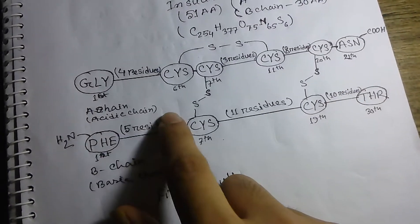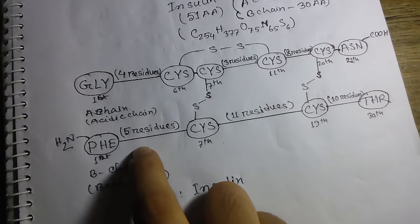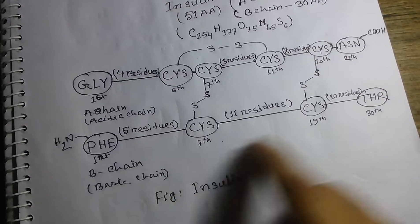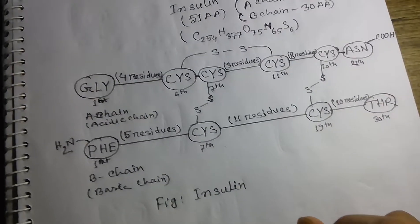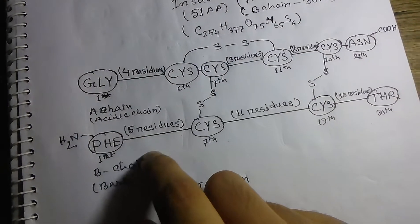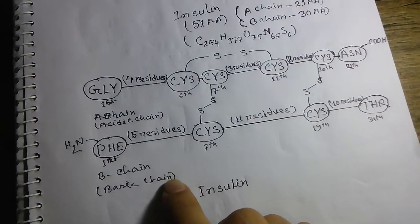B chain's first position amino acid is phenylalanine and the last position is threonine. Phenylalanine contains an amino group, so B chain is called the basic chain.